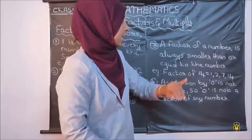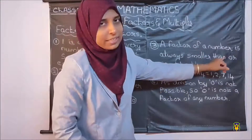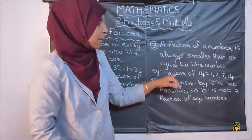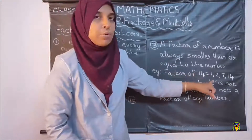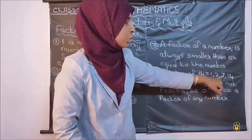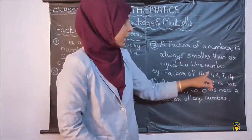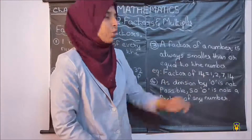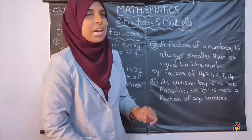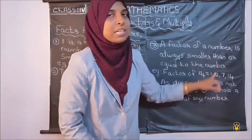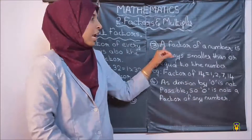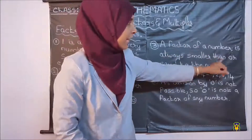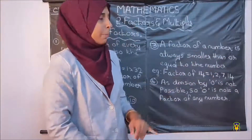Next, a factor of a number is always smaller than or equal to the number. For example, factors of 14 are 1, 2, 7, 14. Here 1 is less than 14, 2 is also less than 14, 7 is also less than 14, and 14 is equal to 14. So a factor of a number is always smaller than or equal to the number.